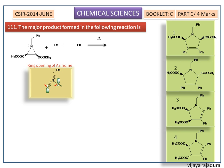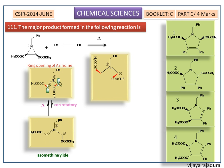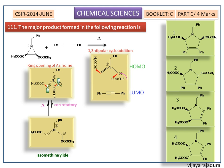We get the trans intermediate — that is, the azomethine ylide — which is in trans form. Now we look at the HOMO of the 1,3-dipolar compound. The primary orbital interaction leads to a 1,3-dipolar addition reaction.